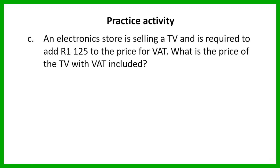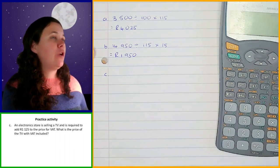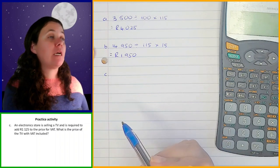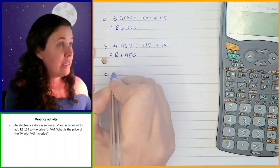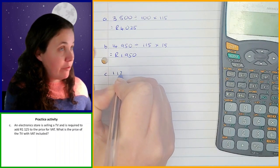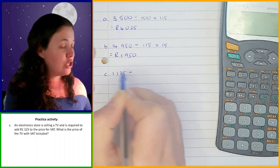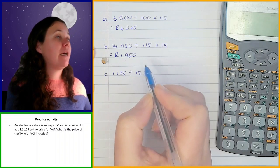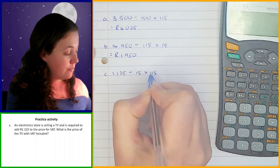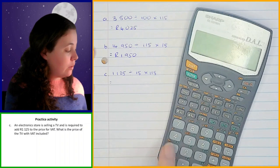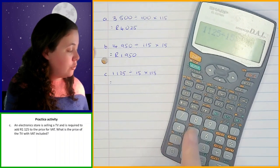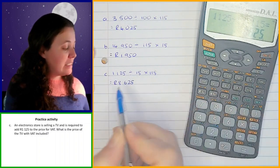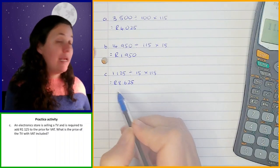Let's go through that example. We've been given the amount of VAT required: 1,125 rand. We need to work out the price after VAT has been added. We take 1,125 rand and divide by the percentage it represents, which is the VAT percentage — so 15%. Then we multiply by the price with VAT included, which is 115. So: 1,125 divided by 15 times 115, and that gives us 8,625 rand. That is how much you would pay for that TV including VAT.